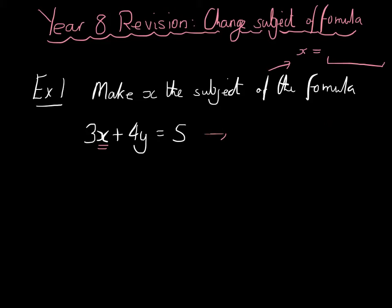You do it exactly like you solve equations. You pretend you're solving for x and do the exact same thing. So I want x on its own on the left-hand side. So I'm going to subtract 4y from both sides. And then I would have just 3x on the left-hand side, and I would have 5 subtract 4y on the right-hand side.